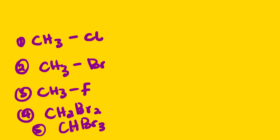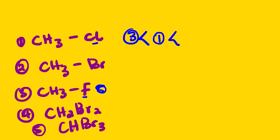The compound with the least boiling point will be number three. Then followed by number five, then number one — looking at the atomic masses. Then number two, followed by number four — the dibromo compound has a higher boiling point compared to the monobromo. And lastly, number four has the highest boiling point because it has three halides attached.